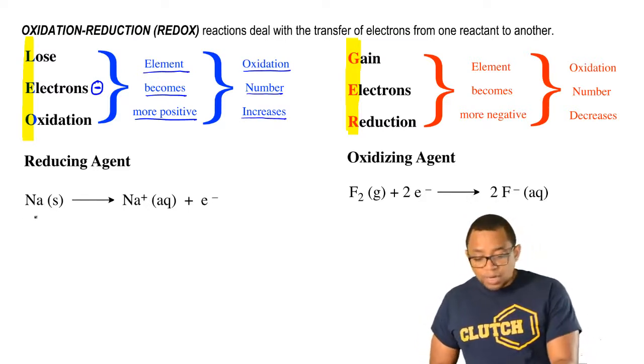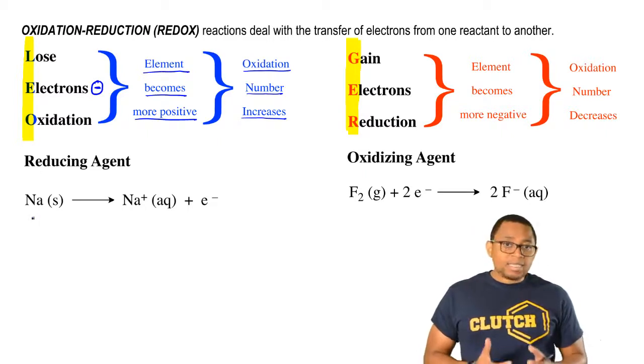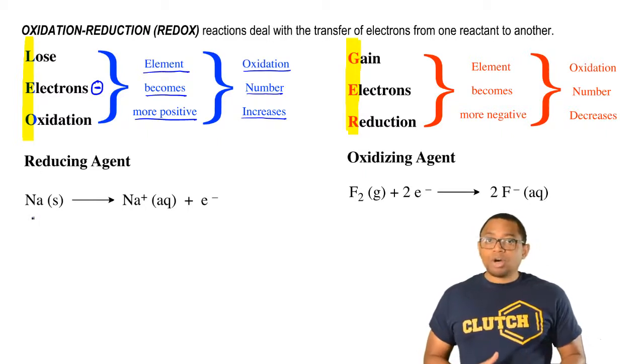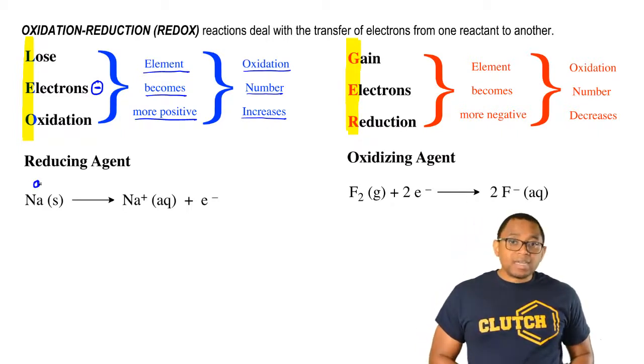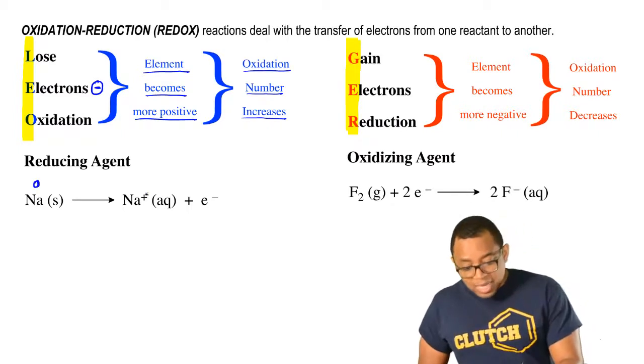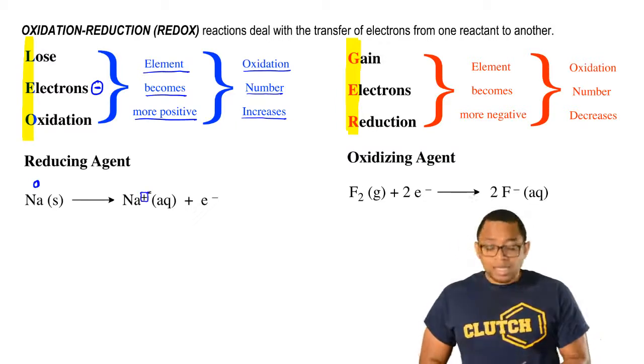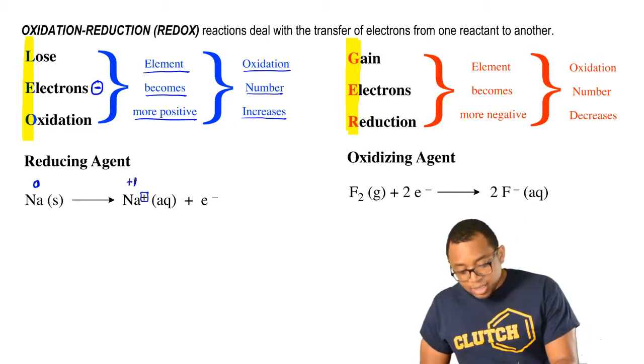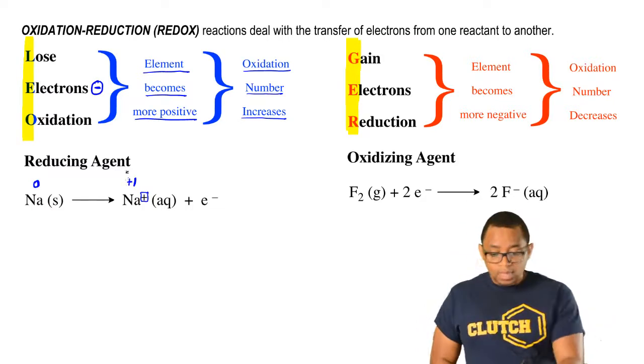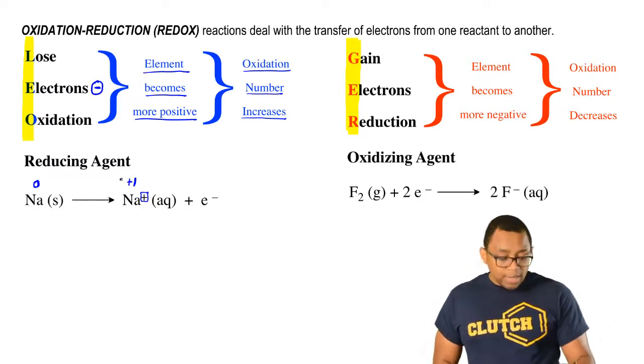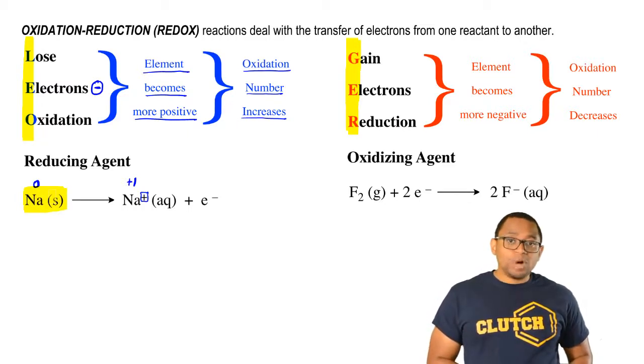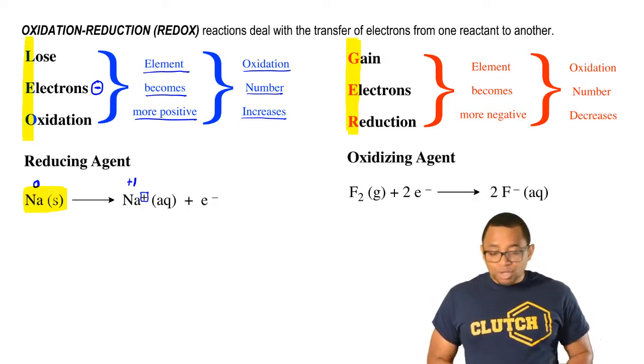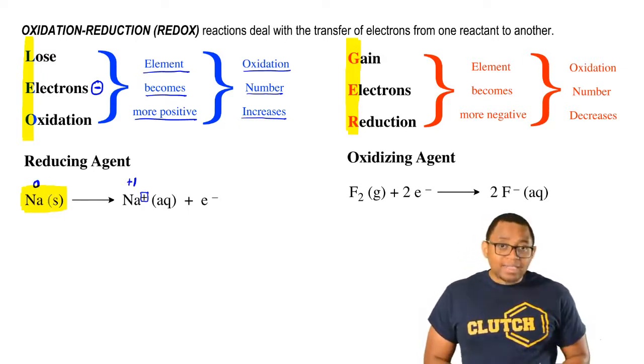If we take a look here, we see that sodium in its natural state has no charge. Its oxidation number would therefore be zero. Then it loses an electron and becomes plus one. Here its oxidation number equals its charge, so it becomes plus one. Sodium solid goes from being zero to plus one. Its oxidation number increased. Therefore, sodium solid has been oxidized.